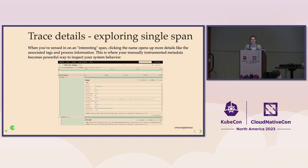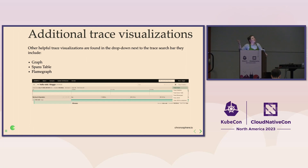The beauty of traces is you can go from that trace aggregate view — some of these requests look a little funky — let me look at one. Hmm, I think this is where the problem is, or it's this call to this database — zoom into that span and then all the way back out again. Traces are really great for that zooming in and zooming out as you're developing hypotheses about what's going wrong. Or maybe what's going right — maybe you made a performance improvement and want to understand how that happened. It doesn't always have to be a bad use case when you're loading up the trace page.